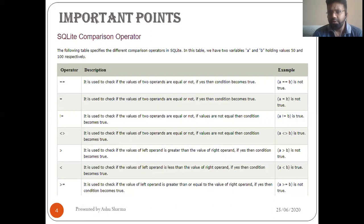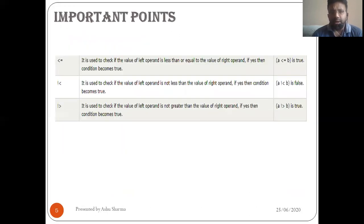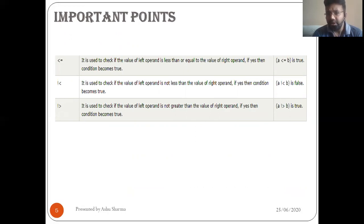The less-than operator: if the left-hand operand is less than the right-hand operand, the condition becomes true. So 50 less than 100 is obviously true. The greater-than-or-equal operator checks if the value of the left operand is greater than or equal to the right operand. Less-than-or-equal similarly checks the condition. Not-less-than checks if the value of the left operand is not less than the right operand, and not-greater-than checks if the left operand is not greater than the right operand. If yes, the condition becomes true.